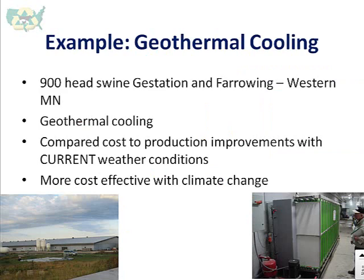Another example of possibly an extreme adaptation: this is a 900-head swine gestation and farrowing site, also in western Minnesota, and they installed geothermal cooling. That cooling takes cold or tempered water out of the ground, runs it through a heat exchanger, and into some tempering hallways in the facility, so their barns are cool in the summertime. It was a significant investment, but looking at improvements in number of pigs produced per sow, they found it very cost effective — and it would be even more so if temperatures increase over the next 20 to 50 years.